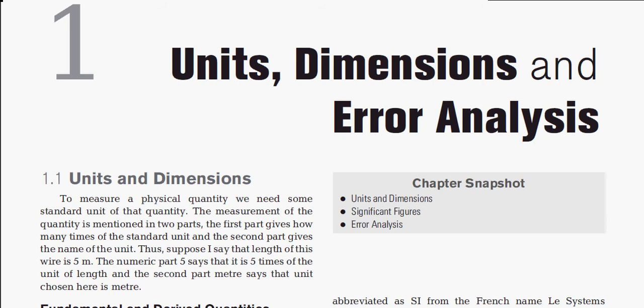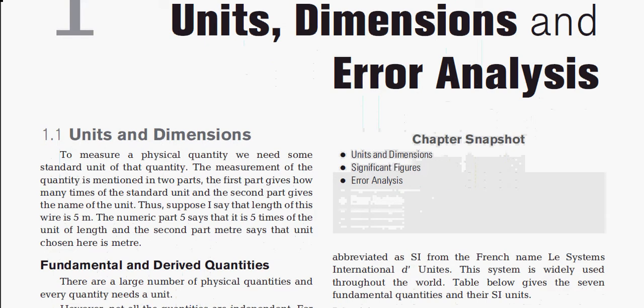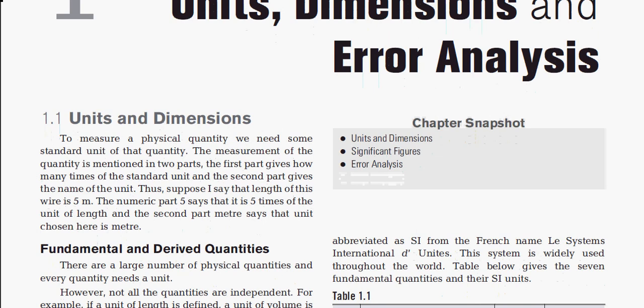Measurement of a physical quantity is mentioned in two parts. The first part gives how many times of the standard unit, and the second part gives the name of the unit. For example, if the length of a wire is 5 meters, the numeric part 5 says it's 5 times the unit length, and meter is the unit chosen.